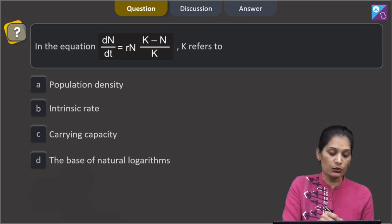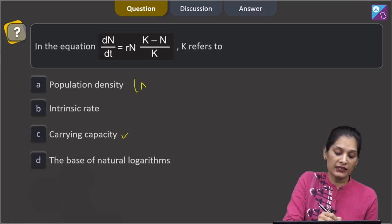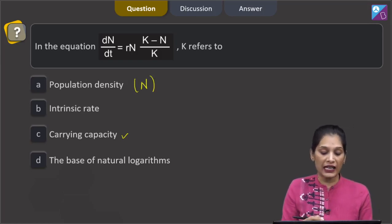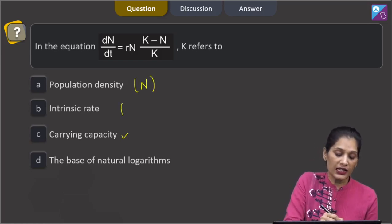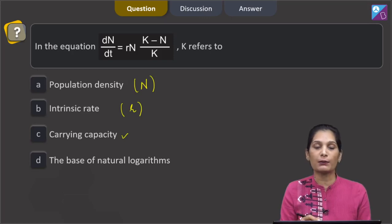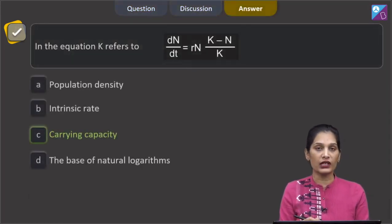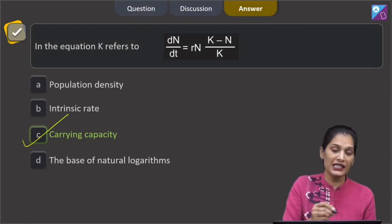This k refers to the carrying capacity. Now population density is represented by n over here. Intrinsic rate of natural increase is represented by r over here. So we can say the carrying capacity is represented by k. So the correct option for the given question is option C.